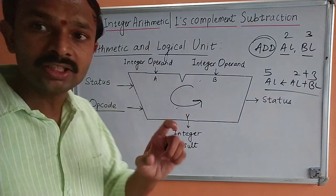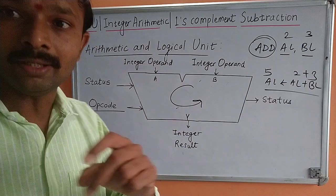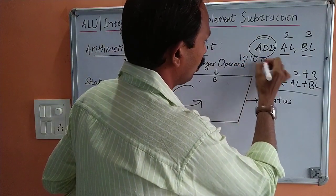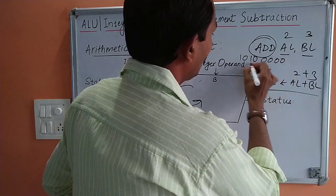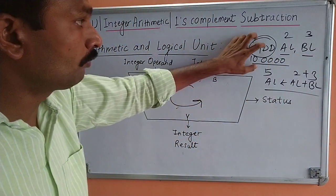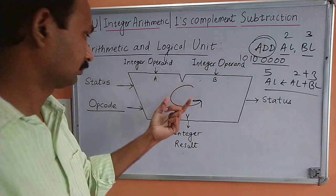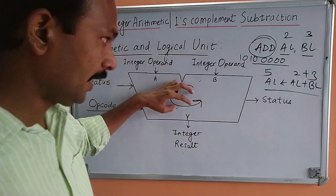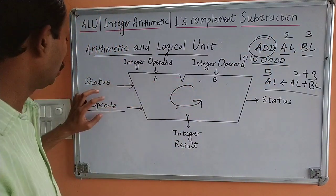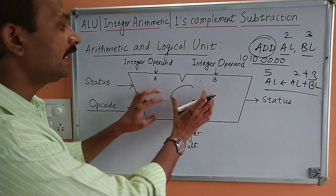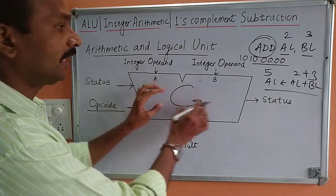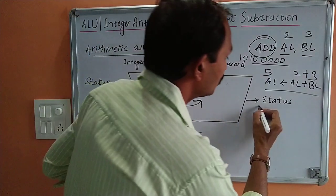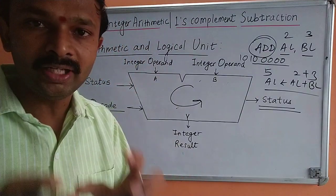As we know, the opcode is the operational code which is associated with every single instruction. ADD will have, for example, some opcode — I am taking, for example, an 8-bit opcode. That opcode will be fed to the ALU. The operand contents will be fed to the ALU. It will perform the operation. So the opcode will be needed in this particular case and the status at the time of the operation will be maintained. Once you get the result, the status after the result will also need to be maintained.